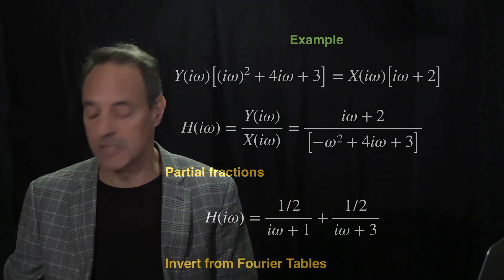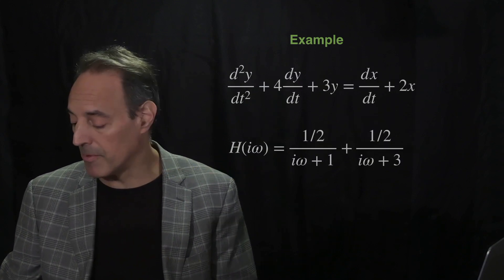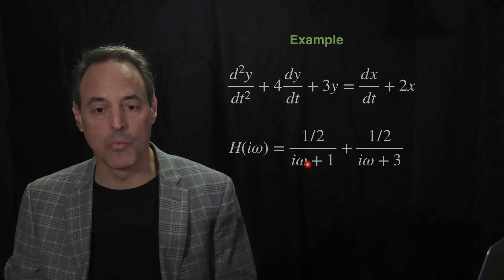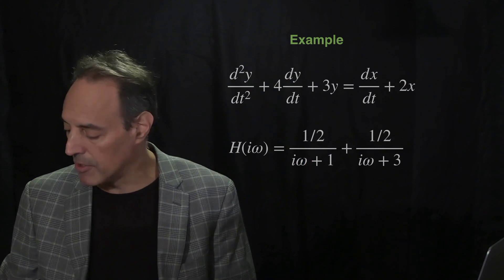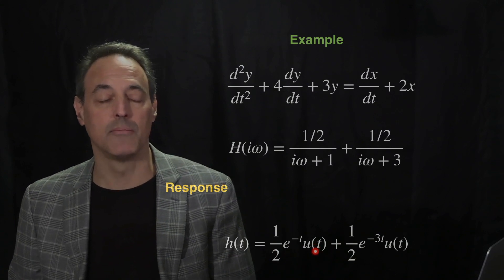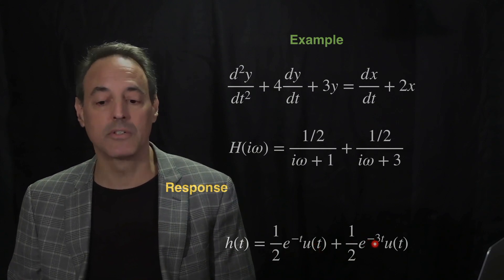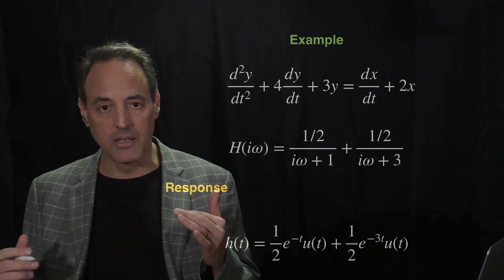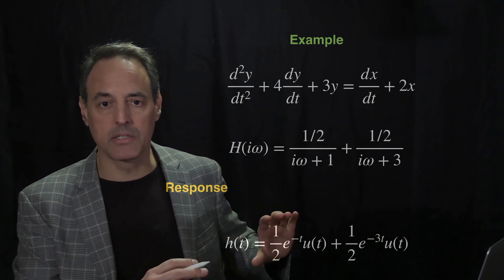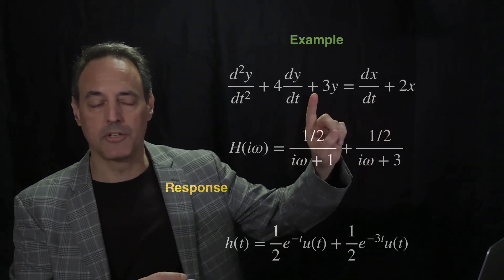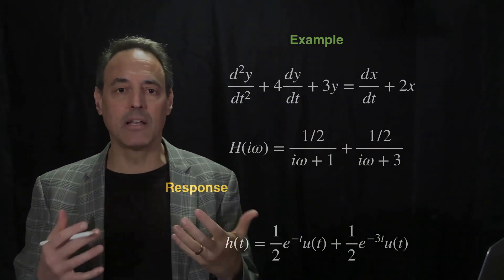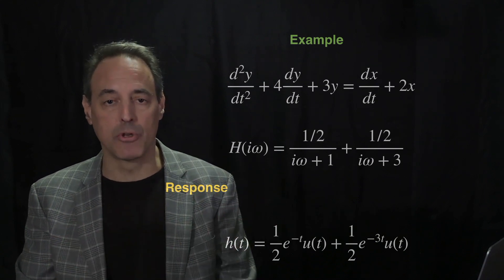These two terms allow us to do the inverse Fourier transform simply by looking at our Fourier transform tables. Inverting each term gives the impulse response: H(t) = (1/2)e^(−t) u(t) + (1/2)e^(−3t) u(t). This is the impulse response of the input-output differential equation pair, derived quickly and elegantly using the Fourier transform.